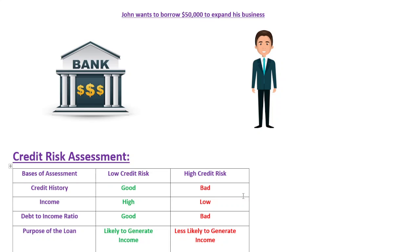Now let's talk about the consequences of credit risk. If John fails to repay his loan, your bank may suffer losses that can have a significant impact on its financial health. When a borrower defaults on a loan, the lender may have to write off the loan as a loss, which badly hurts its profit. In some cases, the bank may also have to sell the borrower's collateral, such as property or inventory, to recover its losses.